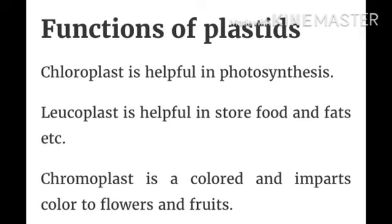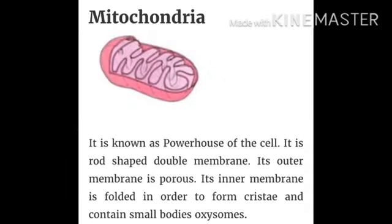Chromoplast gives color to flowers and fruits. Now, the organelles present in the animal cell. First is mitochondria — it is known as the powerhouse of the cell. It is rod-shaped and double-membrane. Its outer membrane is porous; its inner membrane is folded into structures called cristae, which contain small bodies called oxysomes.